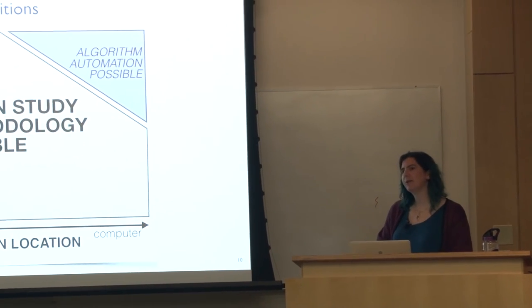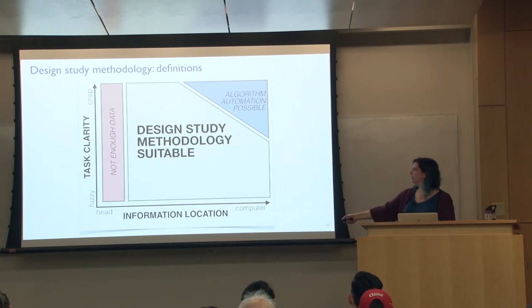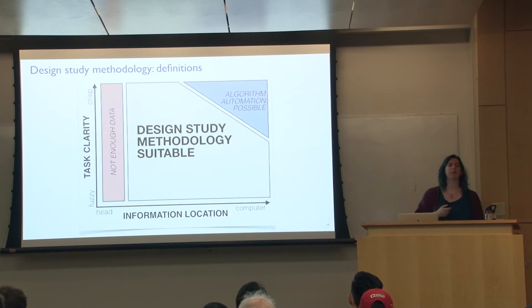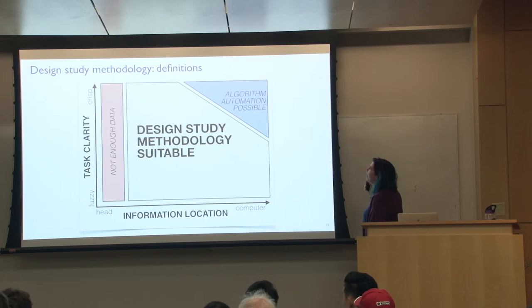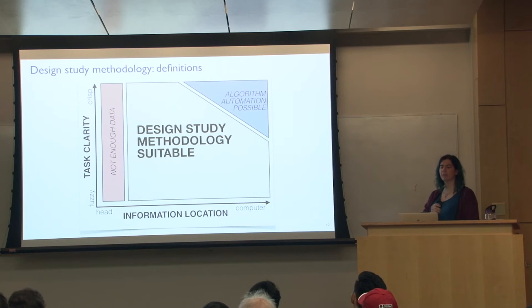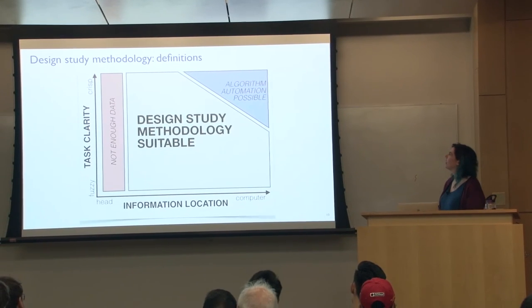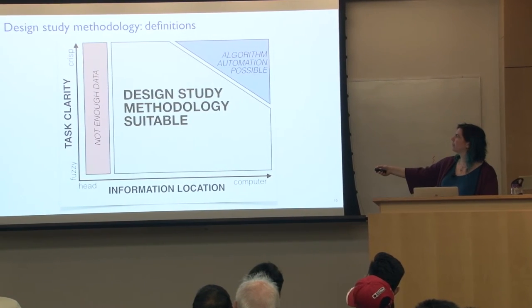One interesting definition for design studies is when would you even want to do one? We talk about task clarity and information location as axes — to what extent is the information in people's heads versus articulated digitally? Clearly, if the data isn't in a form you can compute on, you can't build a computer-based system. The particularly interesting axis is how well you understand the task — ranging from extremely fuzzy to very crisp. Often one accomplishment of a design study is moving along this axis to have much more clarity on the task at the end than at the beginning.